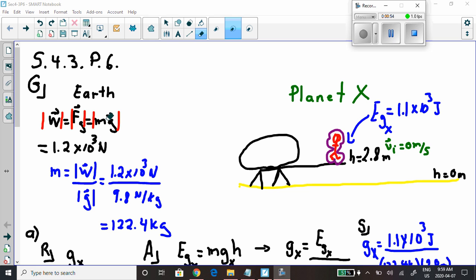So I'm going to rearrange this equation and find out that the mass of the object is equal to the weight of it divided by the gravitational field strength. The mass of the astronaut is the weight of the astronaut divided by the gravitational field strength on the surface of the Earth. We find the mass of the astronaut to be 122.4 kilograms.